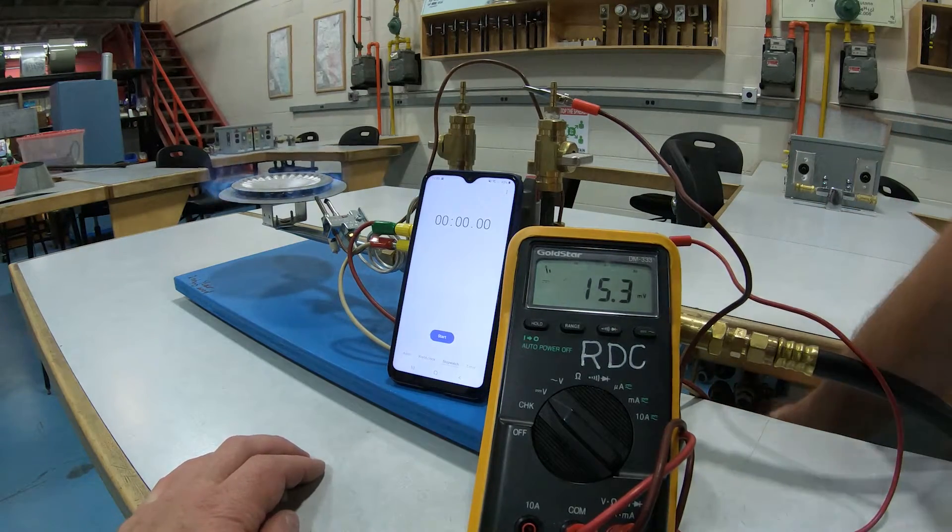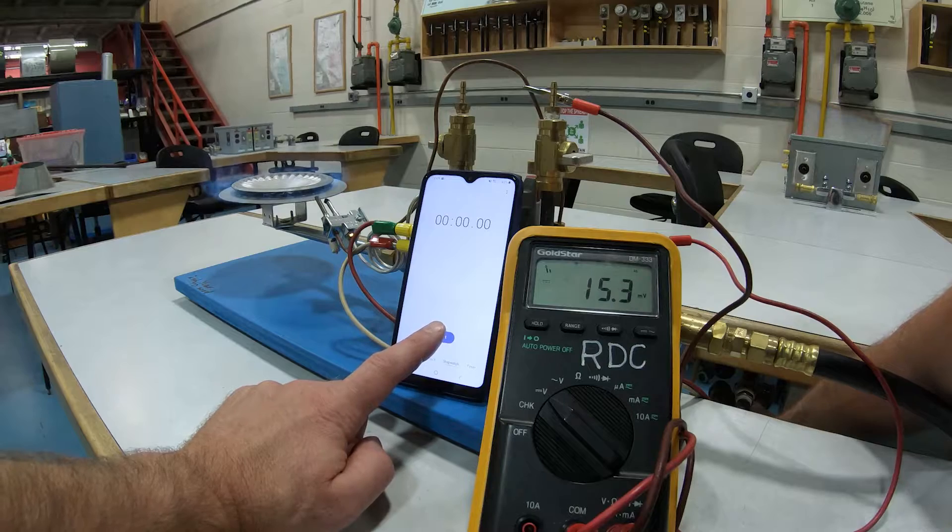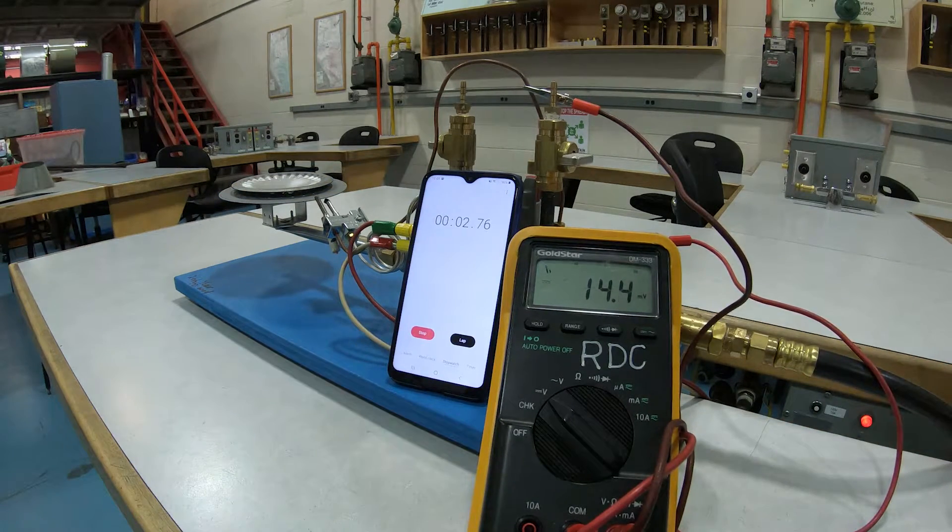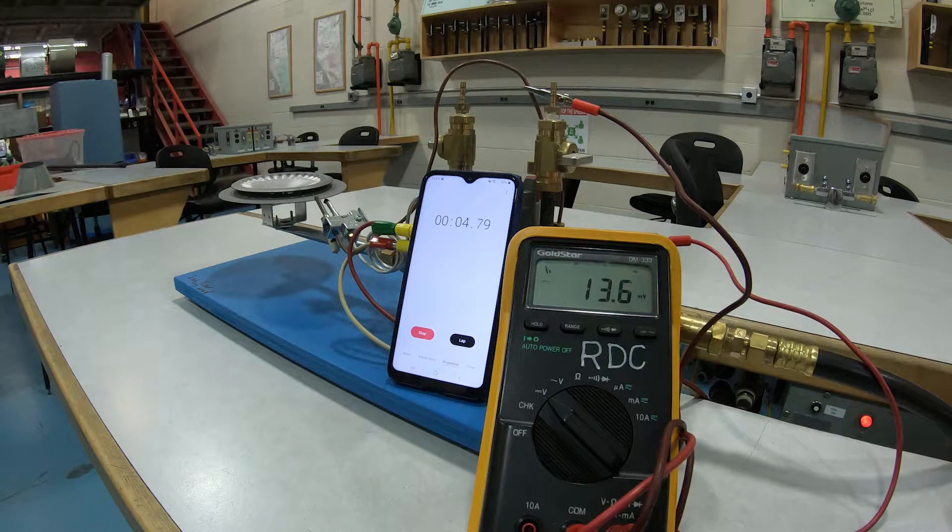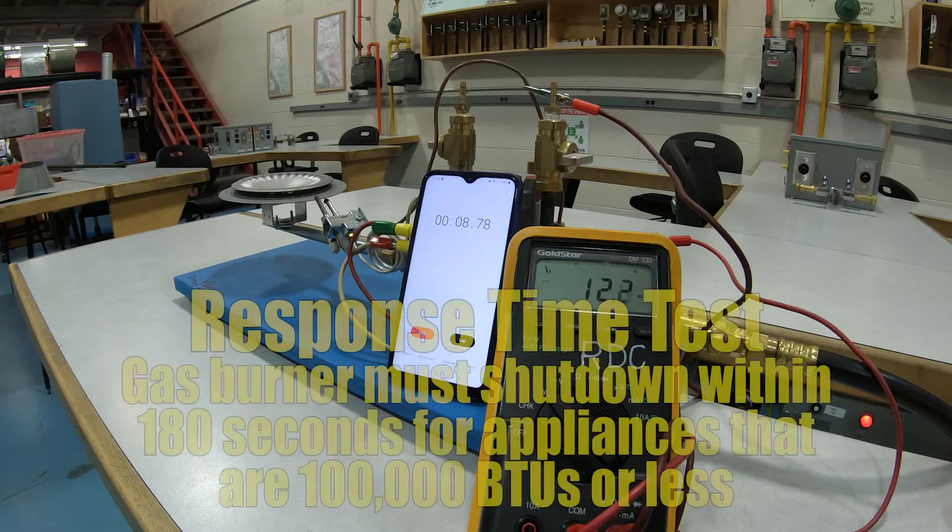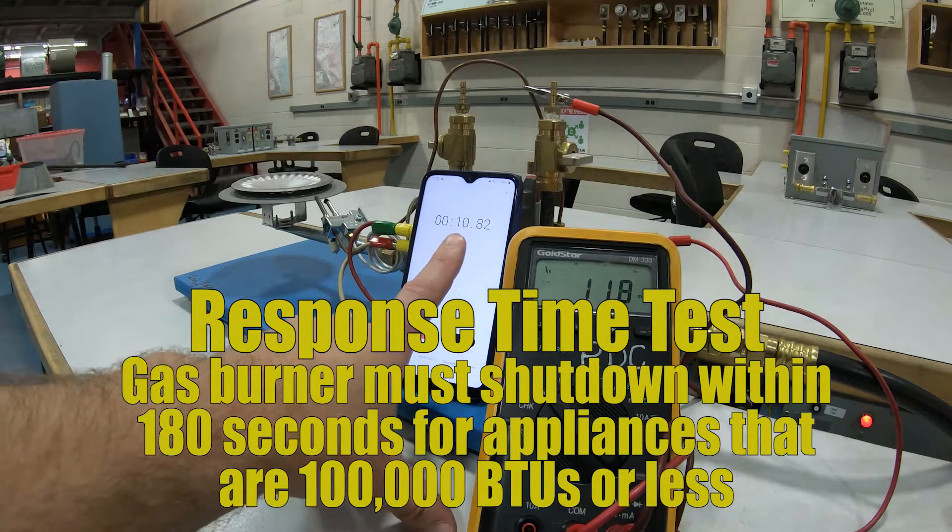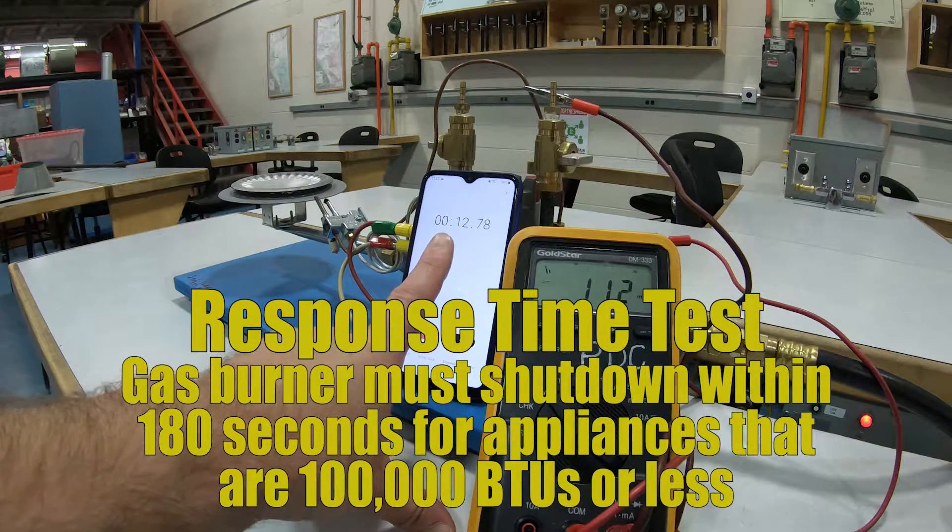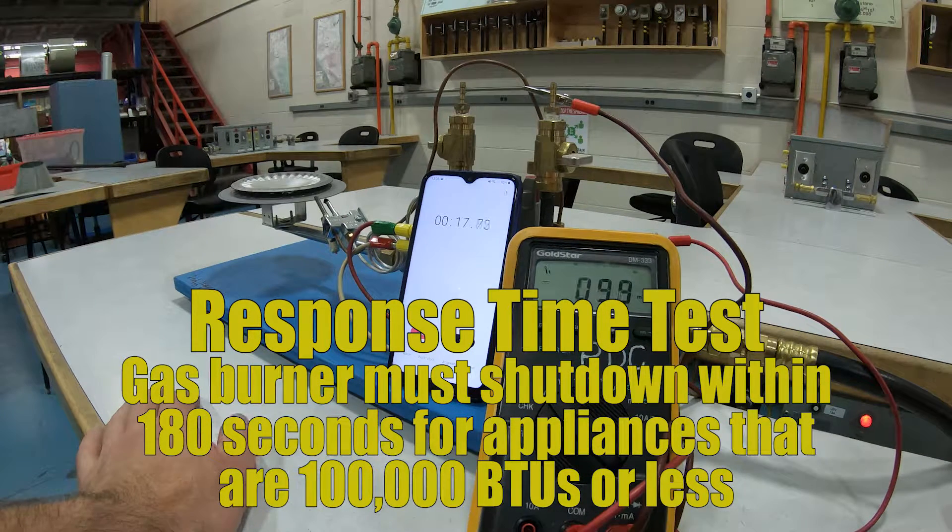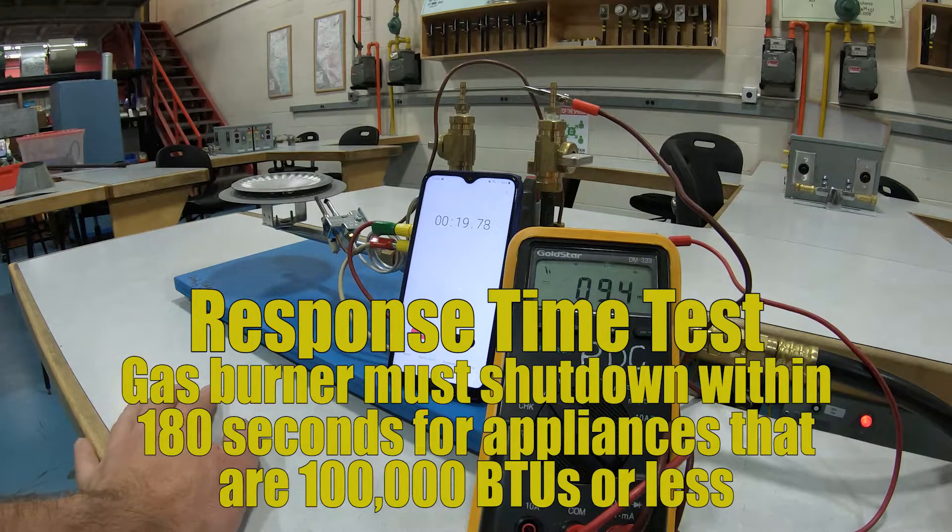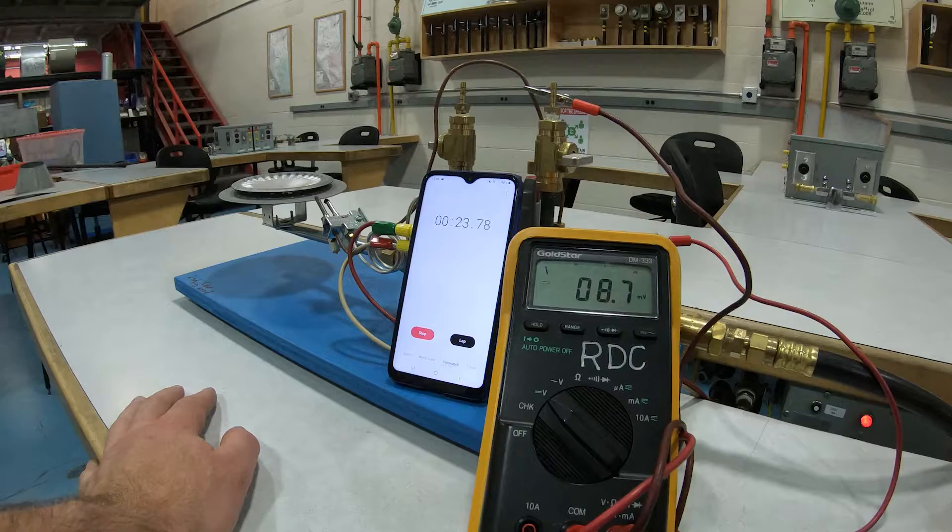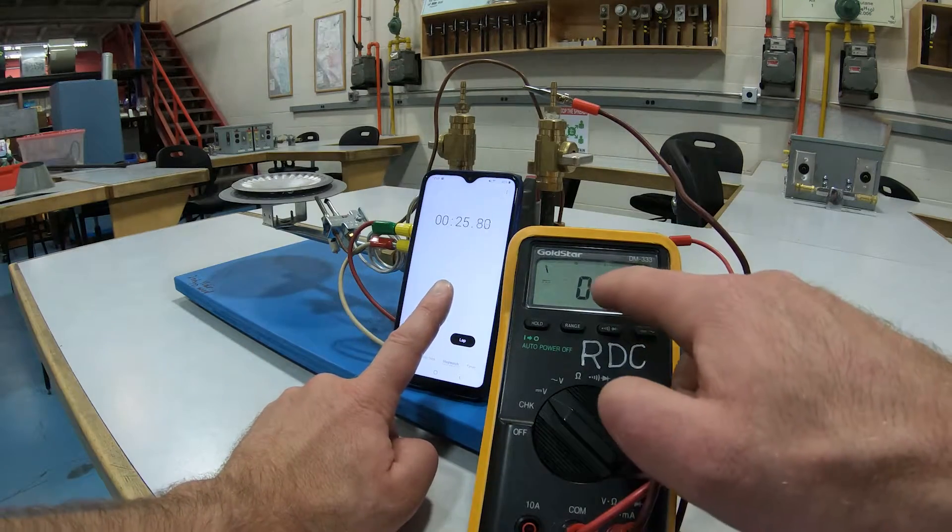There we go. So this is a 36,000 BTU burner. That means that our response time, which is happening right here, needs to be 180 seconds or less. If it takes longer than that to shut down, that means we have other problems. So we're paying close attention to both of these numbers now and we're listening for the click.